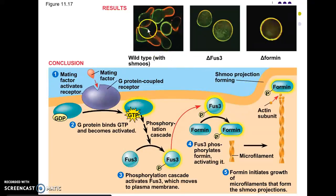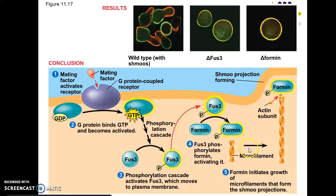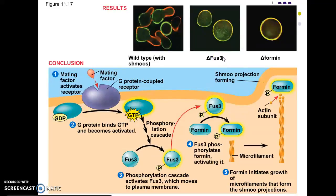Looking at the picture, this would be your normal cell wall, and then this is an odd projection outside of the cell. They noticed that the mating factor caused a SHMOO, and they wondered: is this because of the kinase FUS3, or is it because of the protein formin that controls the construction of microfilaments? To examine the roles of these two, they studied two mutants called delta FUS3 and delta formin. The delta FUS3 mutant yeast cells had no kinase, and the delta formin had no formin protein.